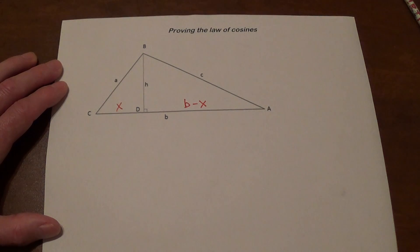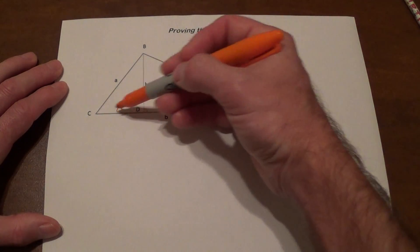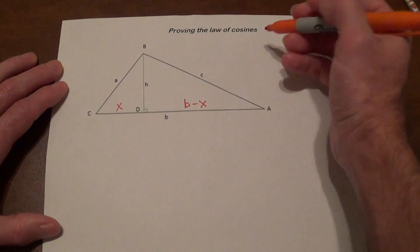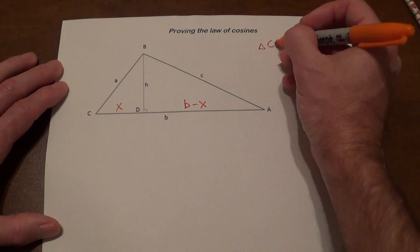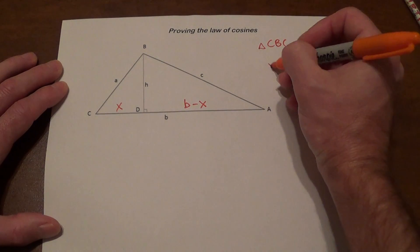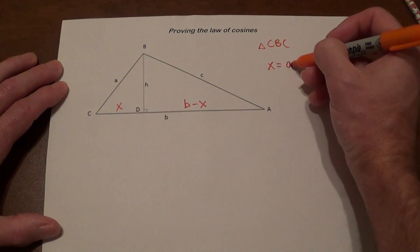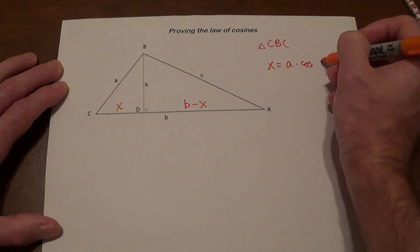We should be able to see that from this triangle here, from triangle CBD, the value of x is going to be a times cosine c.